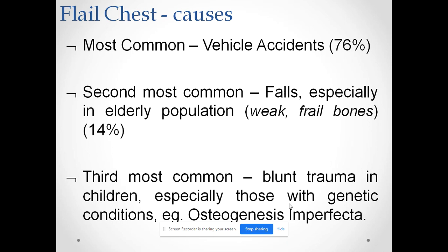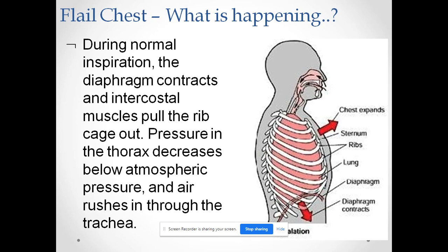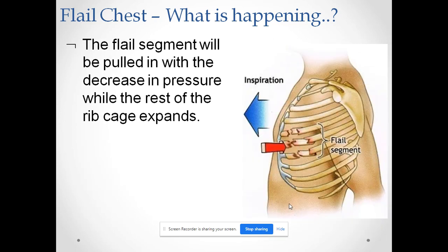During normal inspiration, the diaphragm contracts and the intercostal muscles pull the rib cage out, so the pressure in the thorax decreases below atmospheric pressure and air rushes in through the trachea. However, in flail chest the flail segment will be pulled inward with the decrease in pressure while the rest of the rib cage expands, producing a paradoxical movement in the patient.